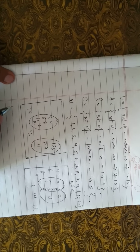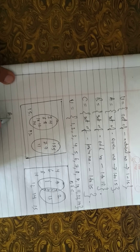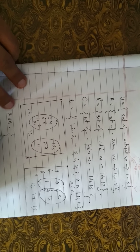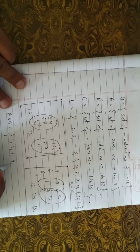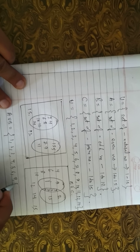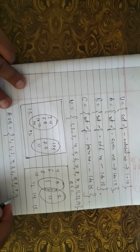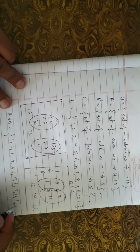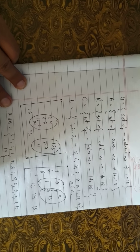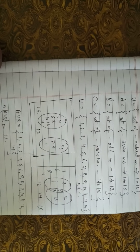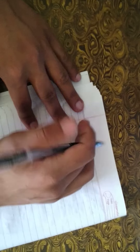From the figure, A∪B equals {1, 2, 3, 4, 5, 6, 7, 8, 9, 10, 11, 12, 14}, so n(A∪B) = 13.